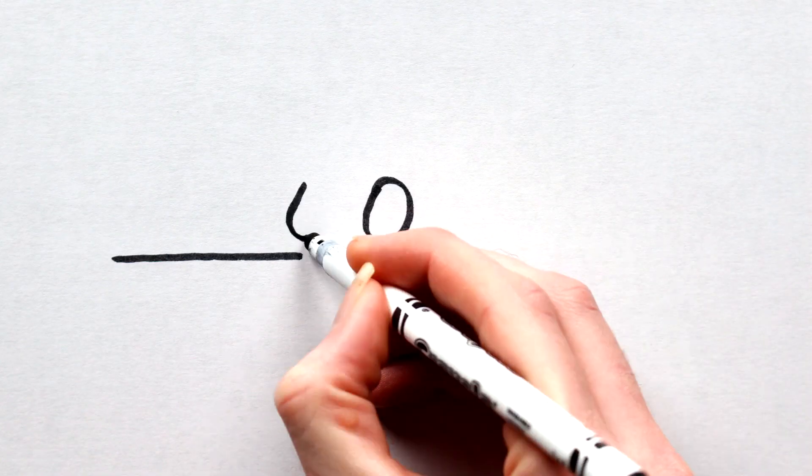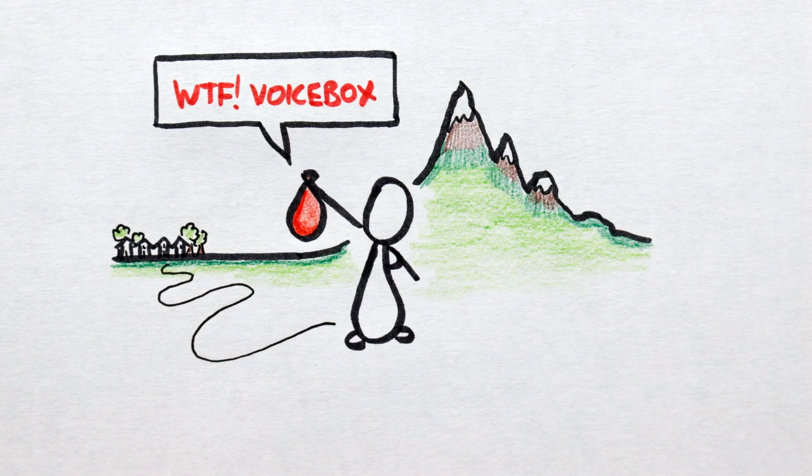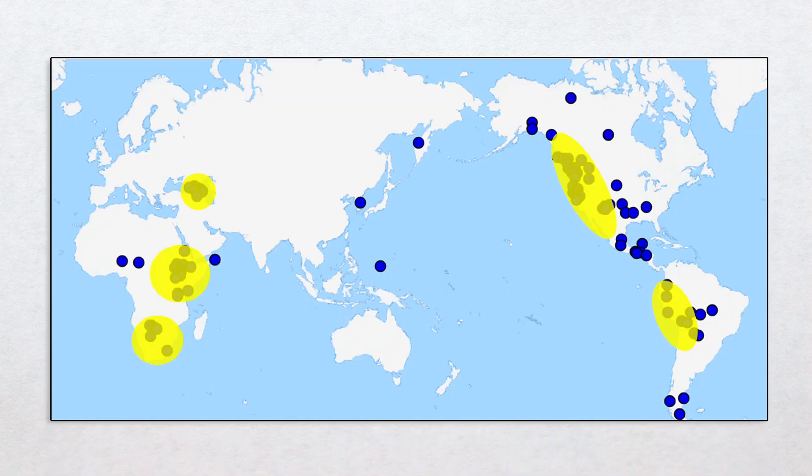Now to be clear, it's not like if you moved from the suburbs to the summit of Everest you'd suddenly begin speaking with ejectives. Rather, high altitude languages may just be more likely to develop and hold onto ejective sounds.